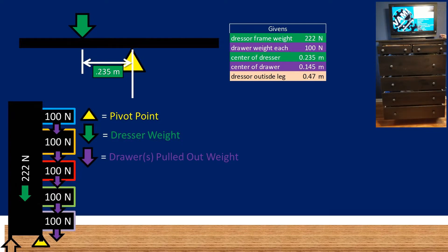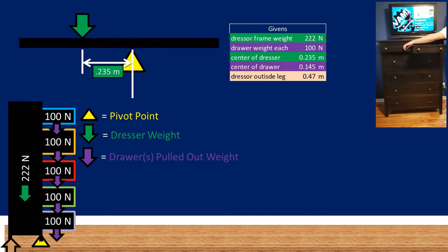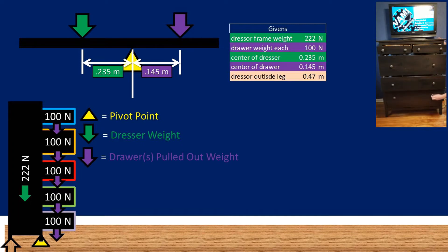The pivot point is marked with a yellow triangle at the front leg of the dresser. We have five drawers that each weigh 100 newtons, and when pulled out, the 100 newton center of mass is 0.145 meters away from the pivot point or yellow triangle.